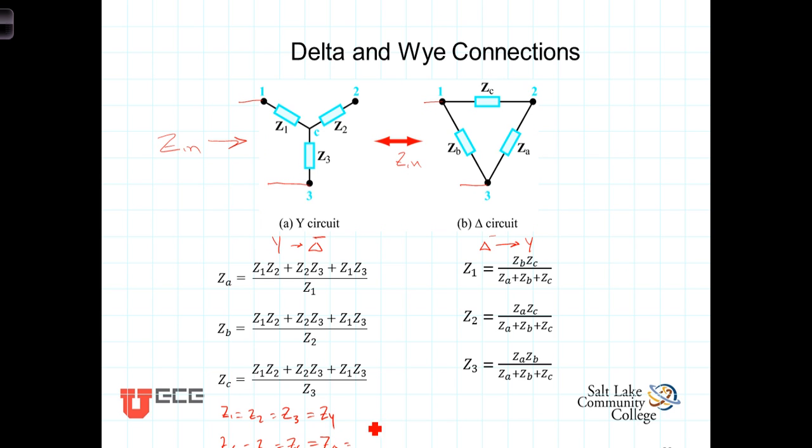Z delta is equal to, if these Zs are the same, you have one, two, three Z sub Y squared divided by Z sub Y. So Z delta then is equal to three times Z Y.